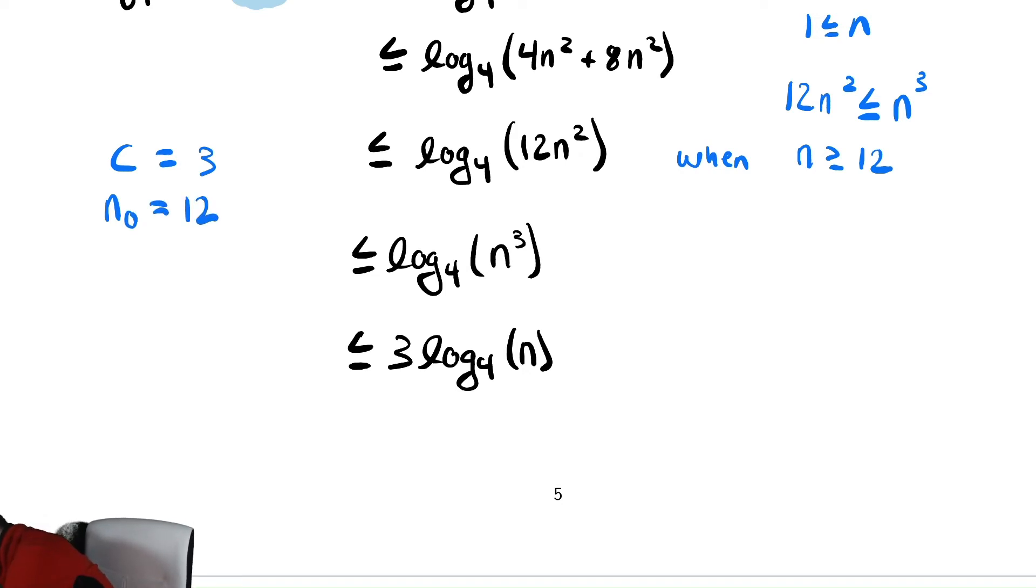Therefore, our conclusion is that the given function, log base 4 of 4n squared minus 5n plus 8, is in big O of log base 4 of n as well.